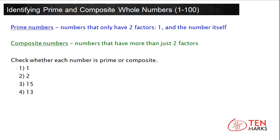Let's start with number 1. The number 1 has only one factor, 1, which is the same as itself. 1 is a special number — it is neither prime nor composite. It is the only whole number which is neither prime nor composite.